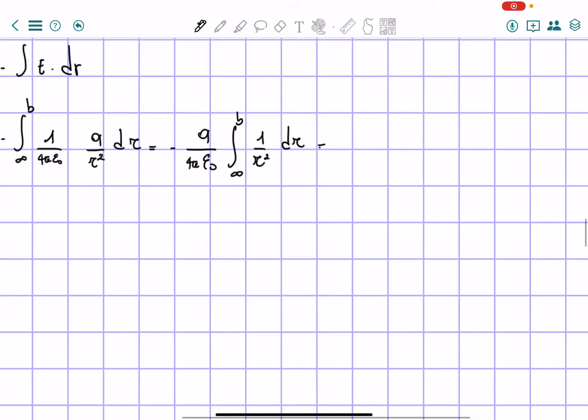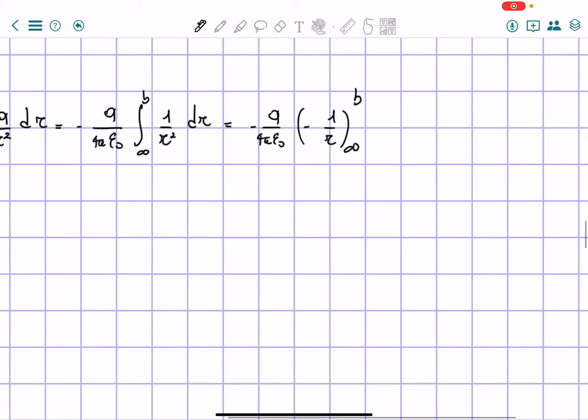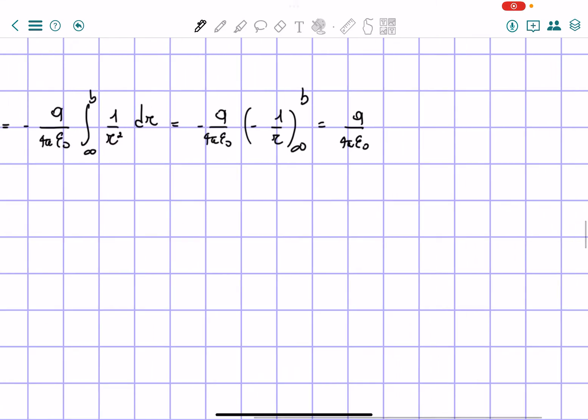So we have the integral of this which means, let's rewrite the constant, q over 4 pi epsilon naught, then we'll be minus 1 over r from infinity to b. So we can take out the negative and it's going to be positive and then q over 4 pi epsilon naught. And then when we plug in the infinity we get 0, so the only answer that we have is 1 over b. And that's the first one.